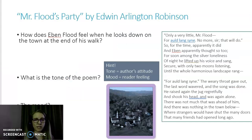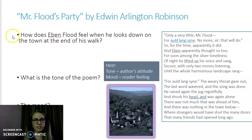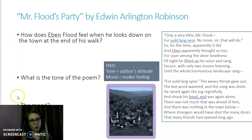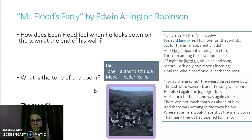For 'Mr. Flood's Party,' I'm not going to read the entire piece. Pause here and read it yourself. Now that you've read it, I want you to consider these questions: How does Eben Flood feel when he looks down at the town at the end of his walk? What is the tone of the poem? What is the mood? Are they different in this case? Keep in mind that tone is the author's attitude and mood is the feeling that the reader gets from the work. Are they the same or different, and how is that the case?